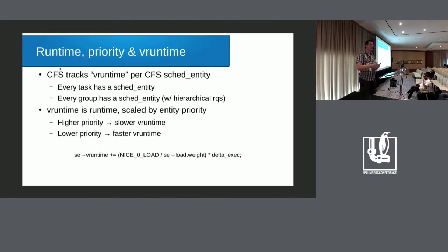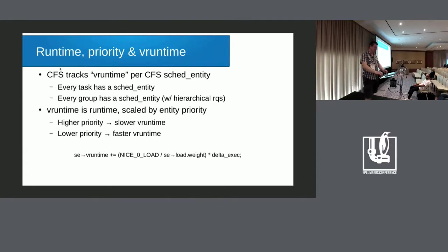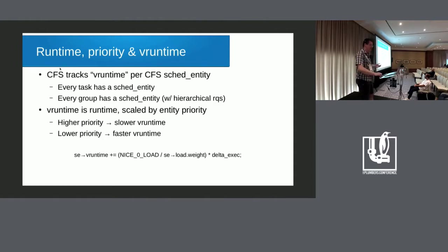Basically, the higher the priority of a task, the lower the v-runtime number will be for a given amount of time that the task has been running. The lower the priority of a task, the more that every microsecond of CPU time counts. So a nice 20 task using a little CPU time will count as a big block of v-runtime, giving higher priority tasks a chance to run. V-runtime is calculated by multiplying the recently run time by a nice scaling number and dividing by the priority of the task or cgroup.